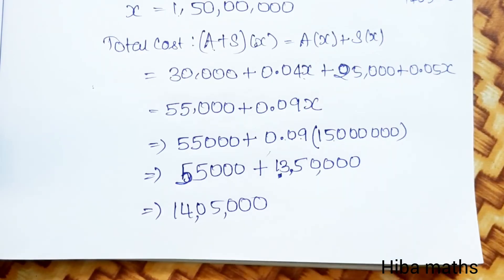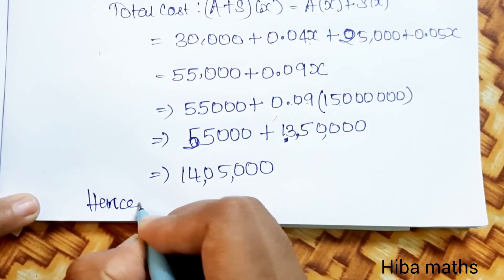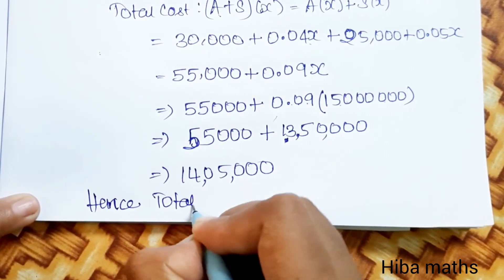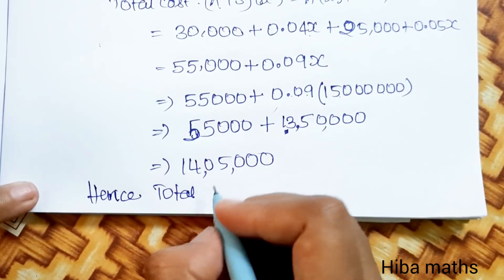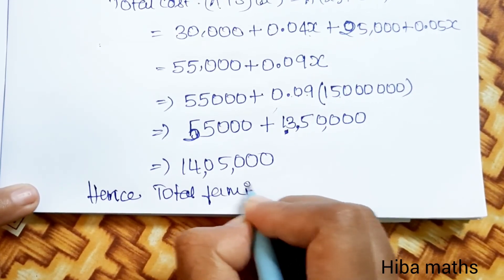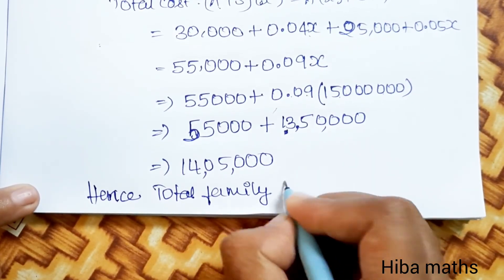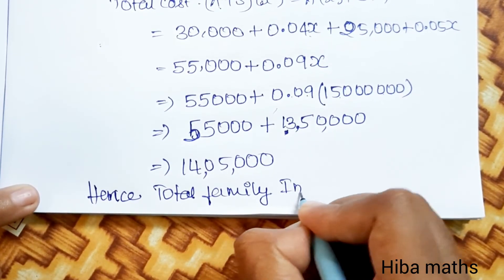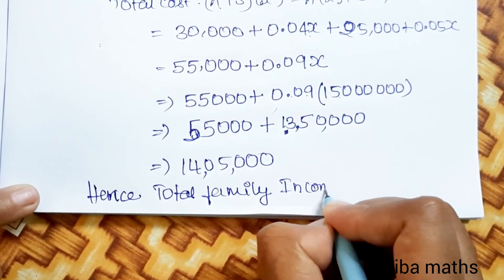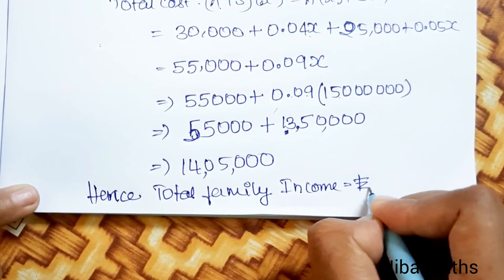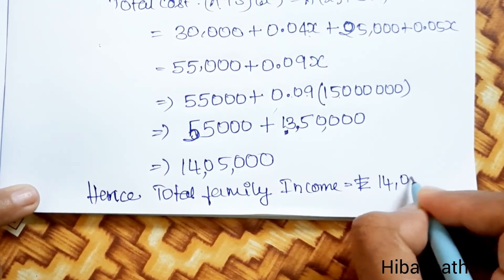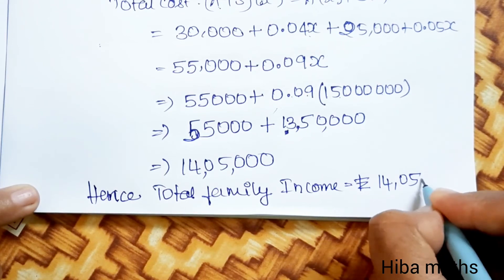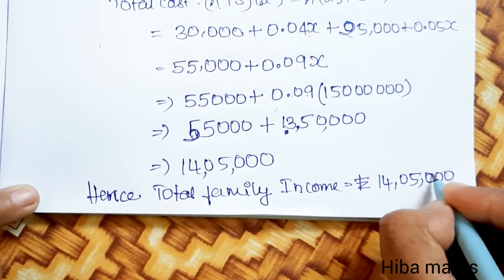So this is our annual income. Hence, the total family income is rupees 14,05,000.